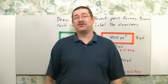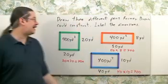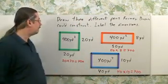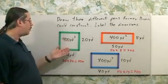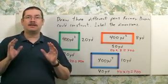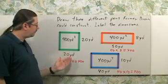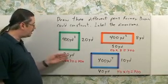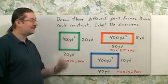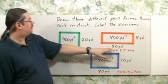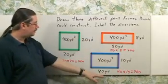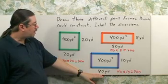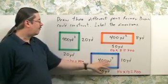There are an infinite number of ways to draw the three pens — here are three possible examples, not to scale. The key is that length times width must equal 400. For example, 20 times 20 is 400, so 20 yards by 20 yards works. Here, 50 times 8 equals 400, so 50 yards by 8 yards works. Finally, 40 yards by 10 yards also gives 400 square yards.